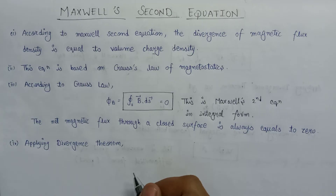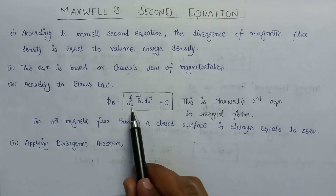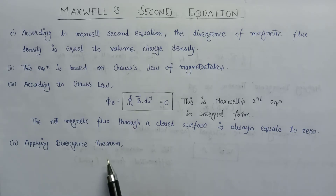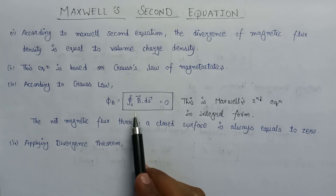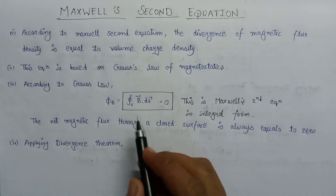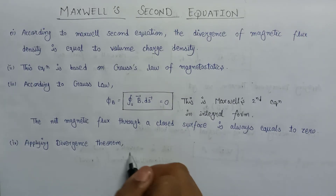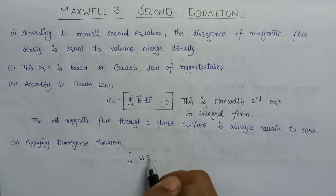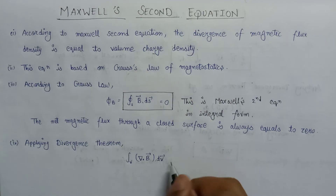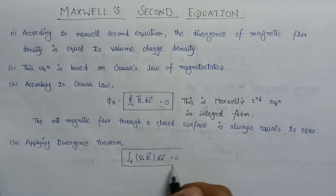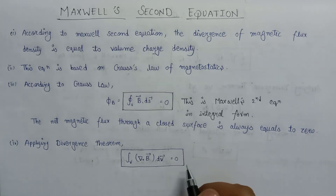By applying the divergence theorem, the surface integral is converted into a volume integral. Therefore, the integral of B·dS over a closed surface can be written as the integral over a closed volume of the divergence of B dV, which equals zero.